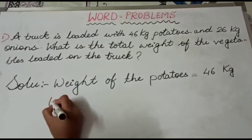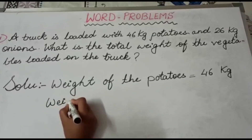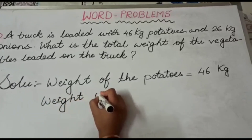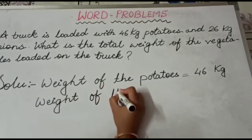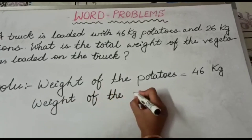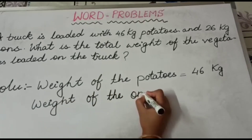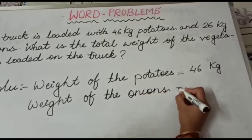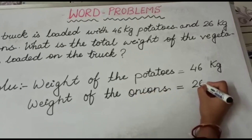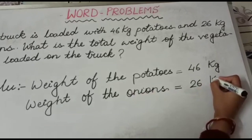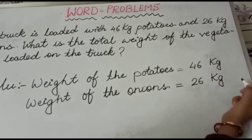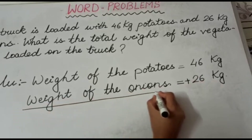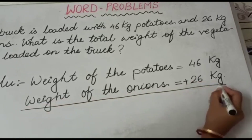Next we have onion. We will write weight of the onions equals to 26 kg. We will put an addition sign and draw a line.